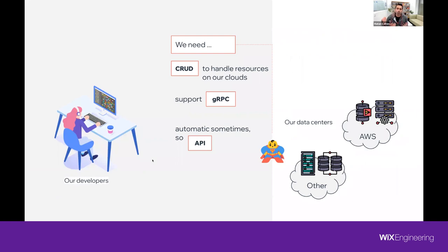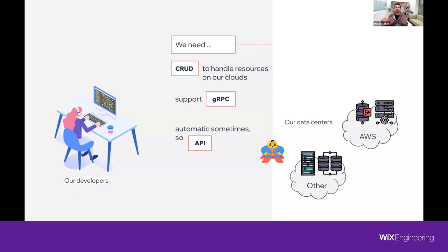Before we start, I want to share the motivation for why we started this project. Take this architecture question: imagine you need to create a system — a microservice, an API, whatever — that needs to expose the capability of CRUD operations to create resources in multi-cloud. For example, you want to create an MSK, which is a Kafka managed in AWS, and you need to create it as an API. You need an automatic process. It can also be EC2, EKS, whatever you need to create.